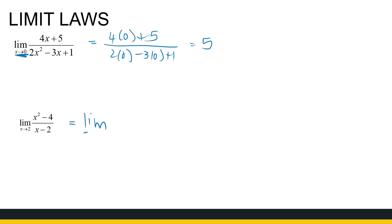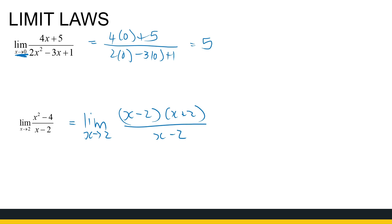So for the limit as x approaches 2 of (x²−4)/(x−2), we factorize the numerator: that's the limit as x approaches 2 of (x−2)(x+2) divided by (x−2). Now we're going to compare two functions: the original function (x−2)(x+2)/(x−2) and what happens if we cancel the (x−2)s — we just get x+2.